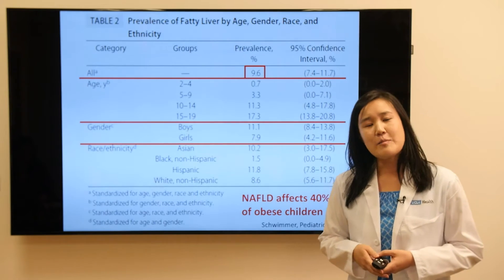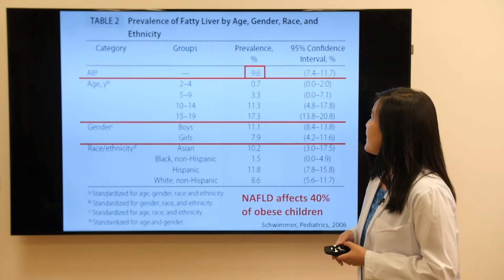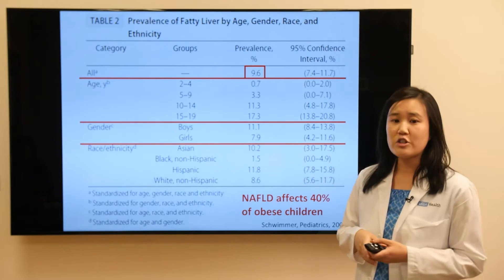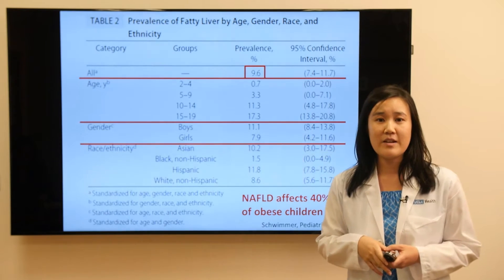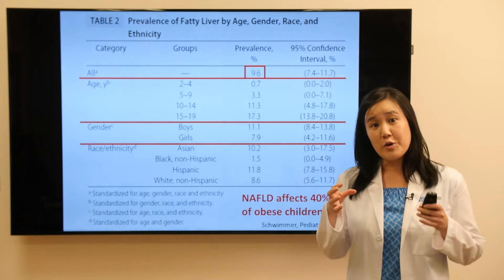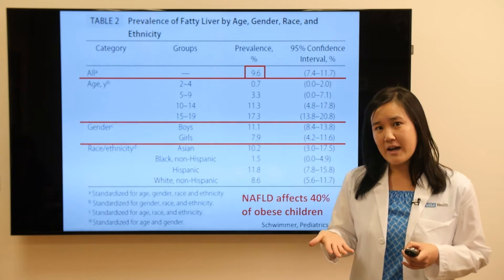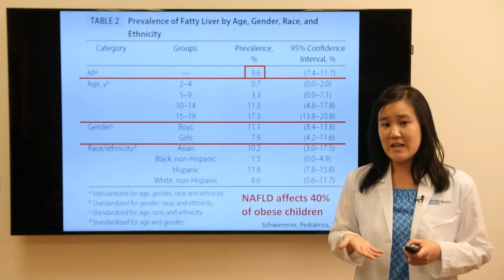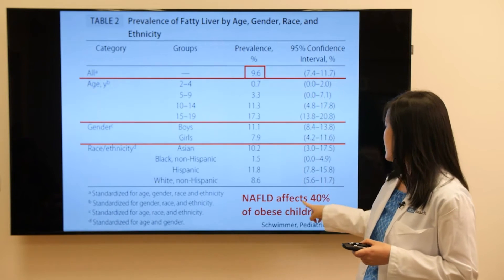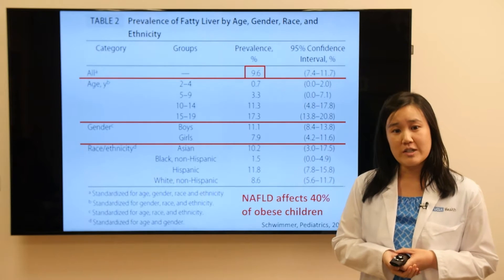Let's look at the prevalence of fatty liver in pediatrics. A paper showed that the overall prevalence of fatty liver in all children is about 10%. If you only look at pediatric patients with obesity, meaning their body mass index, or BMI, is greater than the 95th percentile, that percentage increases from 10% to 40%. So fatty liver affects 40% of obese children.